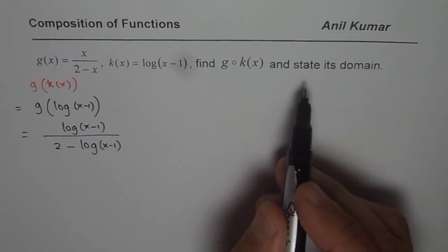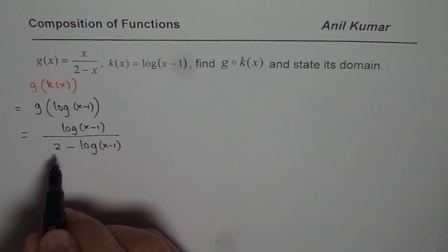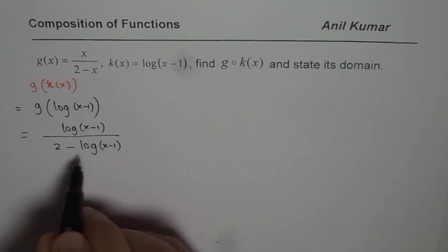Now how to state domain of the function? So the domain is that the denominator cannot be 0. Second, we have two parts to this.